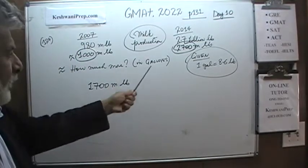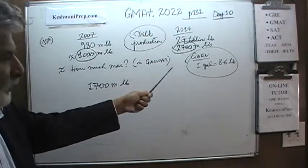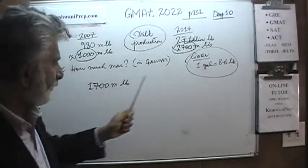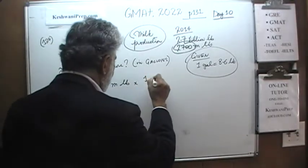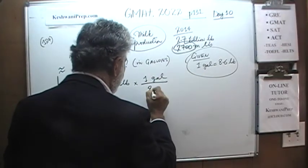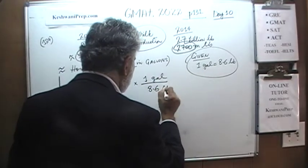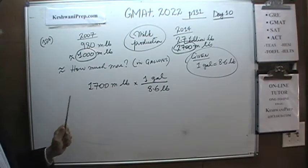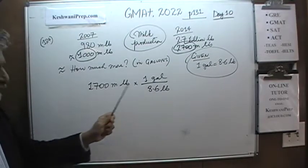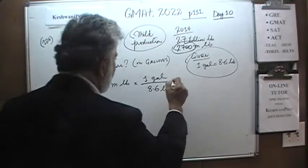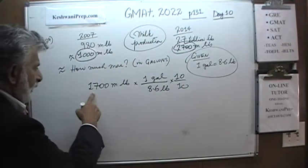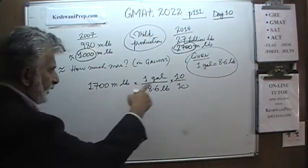Now we don't want the answer in pounds, we want it in gallons, so we have to do the conversion. We want to put gallons on top: 1 gallon is equal to 8.6 pounds. Let's multiply top and bottom by 10 so we can get rid of the decimal. That gives us 86 on the bottom, and we end up with 1,700 times 10 on top.